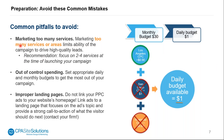A common pitfall to avoid is marketing too many services. If you're doing taxes and also doing extensions or a bunch of different services that require different types of searches, it's going to be a lot harder to manage your budget and will require more budget. The recommendation here is to focus on two to four services at the time of launching your campaign.